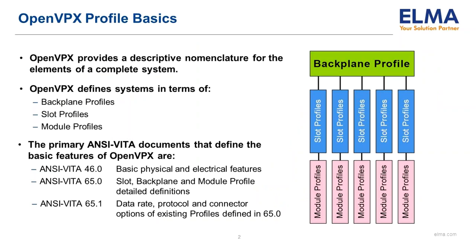ANSI VITA 46 was the first document in the family of standards. It explained the basic features of OpenVPX and details the physical and electrical features of the standard. VITA 65 introduced rules and permissions and described complete backplanes. As the complexity of VITA 65 grew to support higher bandwidths, new signaling protocols, and other features such as radio clocks, RF, and optical feed-throughs, VITA 65 kept expanding.